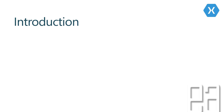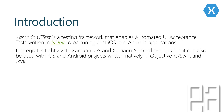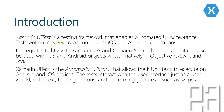Xamarin UI test is a testing framework that enables automated UI acceptance tests written in NUnit to be run against iOS and Android apps. It integrates tightly with Xamarin.iOS and Xamarin.Android projects, but it can also be used with iOS and Android projects natively in Objective-C, Swift, and Java languages. Xamarin UI test is an automation library that allows NUnit tests to execute on Android and iOS devices — the tests interact with the user interface just as a user would: entering text, tapping buttons, and performing gestures like swipes.